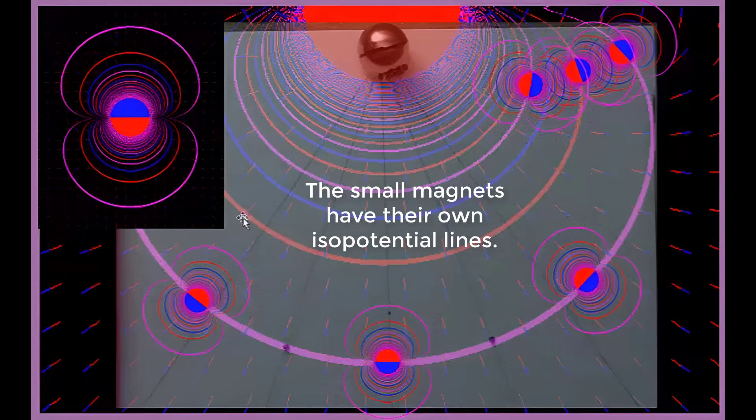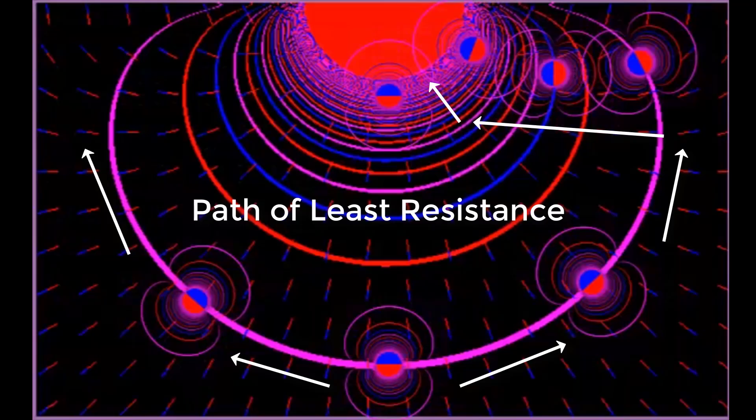The small magnets have their own isopotential lines. The small magnets follow the path of least resistance.